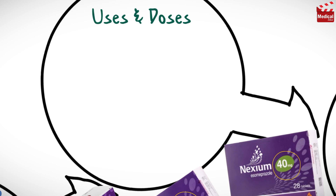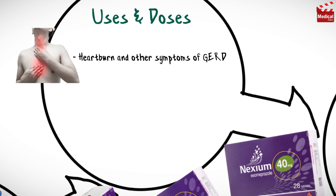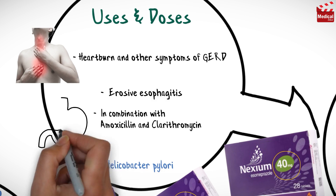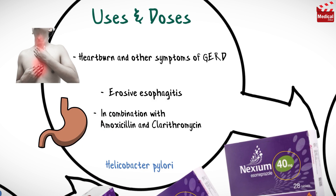Esomeprazole is used in the treatment of heartburn and other symptoms of gastroesophageal reflux disease, and used as a short-term treatment in healing and symptomatic resolution of erosive esophagitis. It is also used in the treatment of Helicobacter pylori in combination with amoxicillin and clarithromycin.